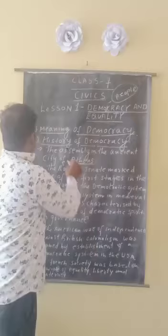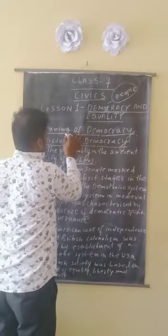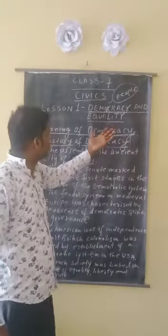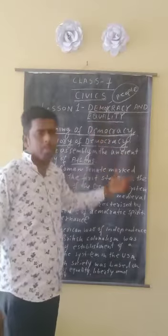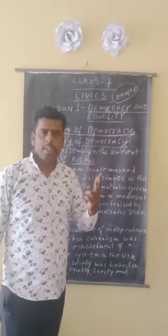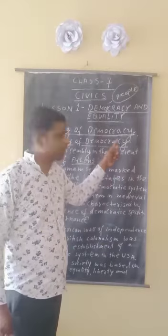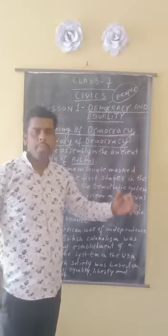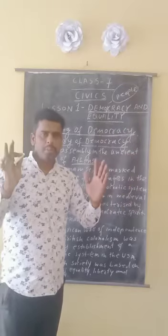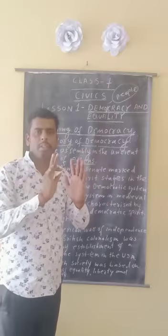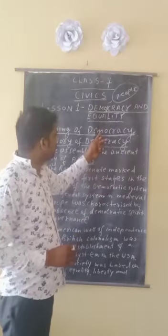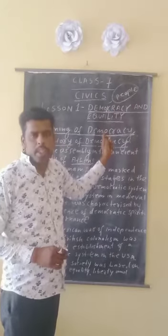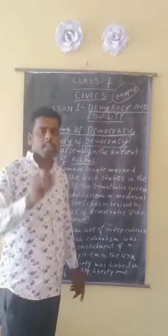So first of all we should clarify the meaning of democracy. Democracy is a combination of two Greek words — 'demos' meaning people and 'kratos' meaning rule of the people. That's why in democracy the people's power is most important, because people choose their candidates by casting their votes.